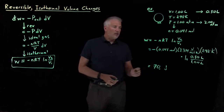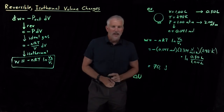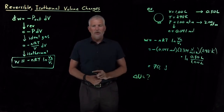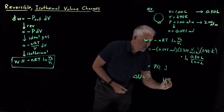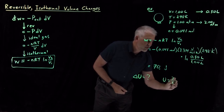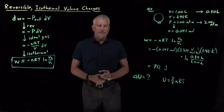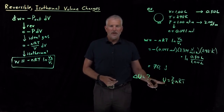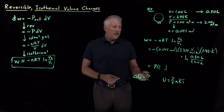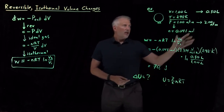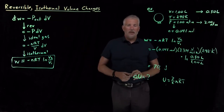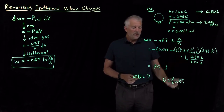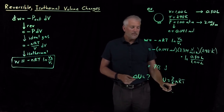We can do a few other things as well. If I want to calculate the change in internal energy of this gas as it undergoes this same process, for an ideal gas described by the 3D particle-in-a-box model, the energy is 3/2 nRT. If I know the temperature, I can calculate the energy. Initially the temperature is 298 K; because it's an isothermal compression, the final temperature is also 298 K. If I haven't changed the number of moles or the temperature, I haven't changed the energy.